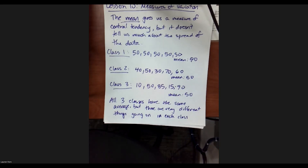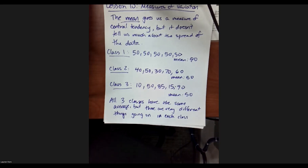I did a test and I compute the class average. Does it give me a lot of information or does it not give me a lot of information? What I'm going to tell you is the more spread out your data is, the less indicative the mean is, because remember how the mean gets affected by outliers.